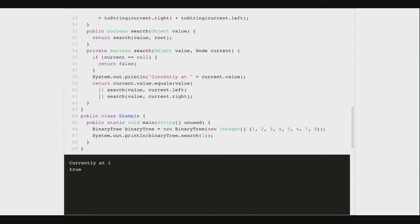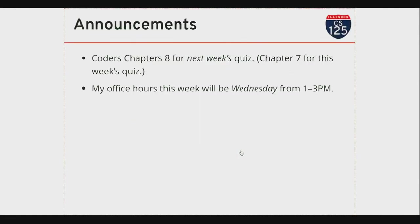This is where we'll pick up on Wednesday. Imagine that when I'm at a node, I have to look for the node in both my left subtree and my right subtree. But what if when I built the tree, I built it a little bit differently—so that I always knew whether the thing I was looking for would be in my right subtree or my left subtree? That is where we will pick up on Wednesday. My office hours this week will be Wednesday at 1 o'clock. There is a chapter of Coders for next week—chapter 7 for today's quiz. I'll see you guys on Wednesday.